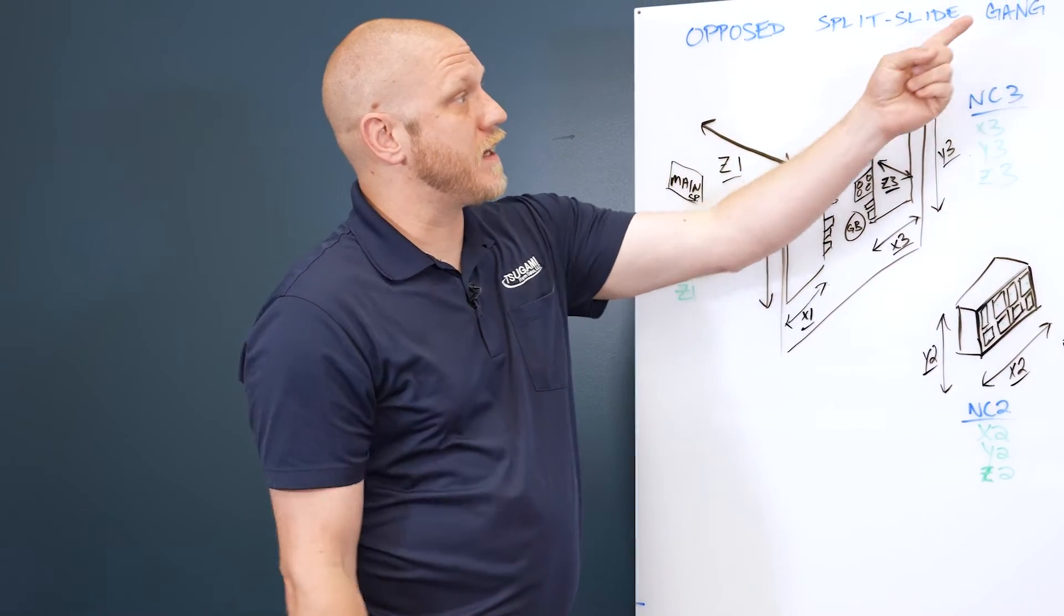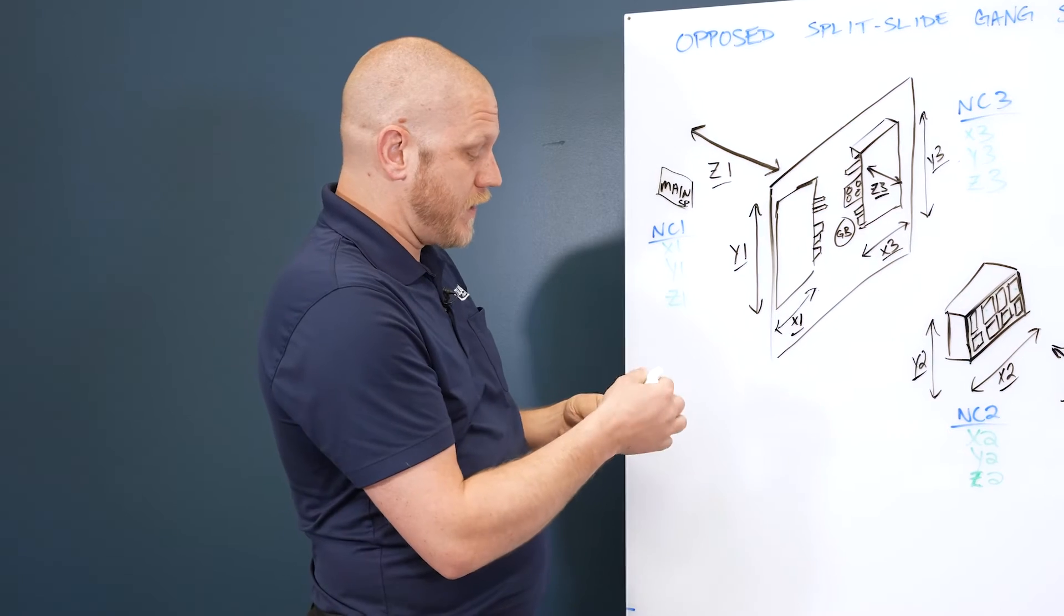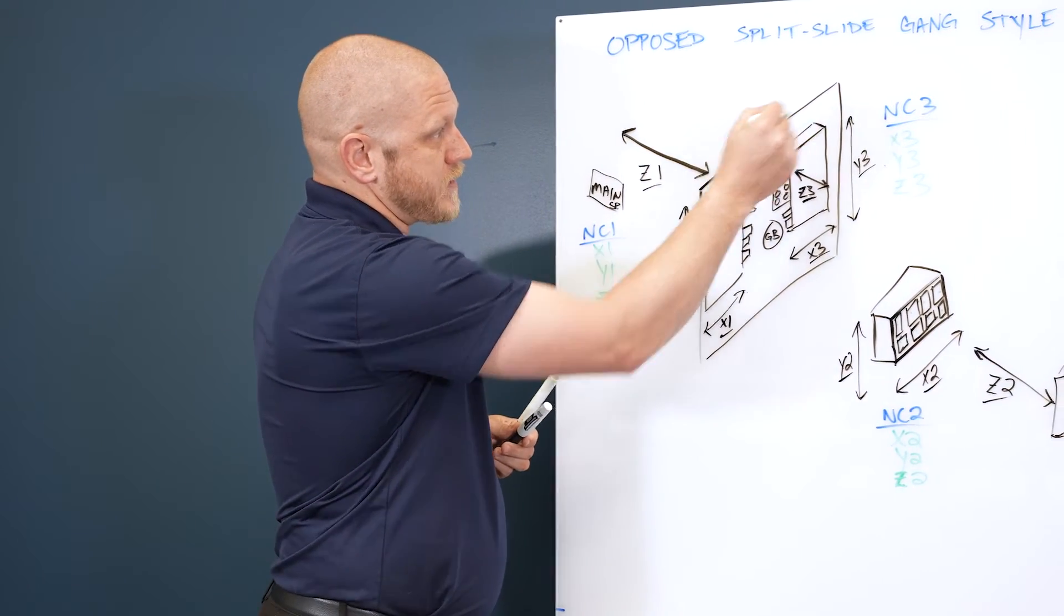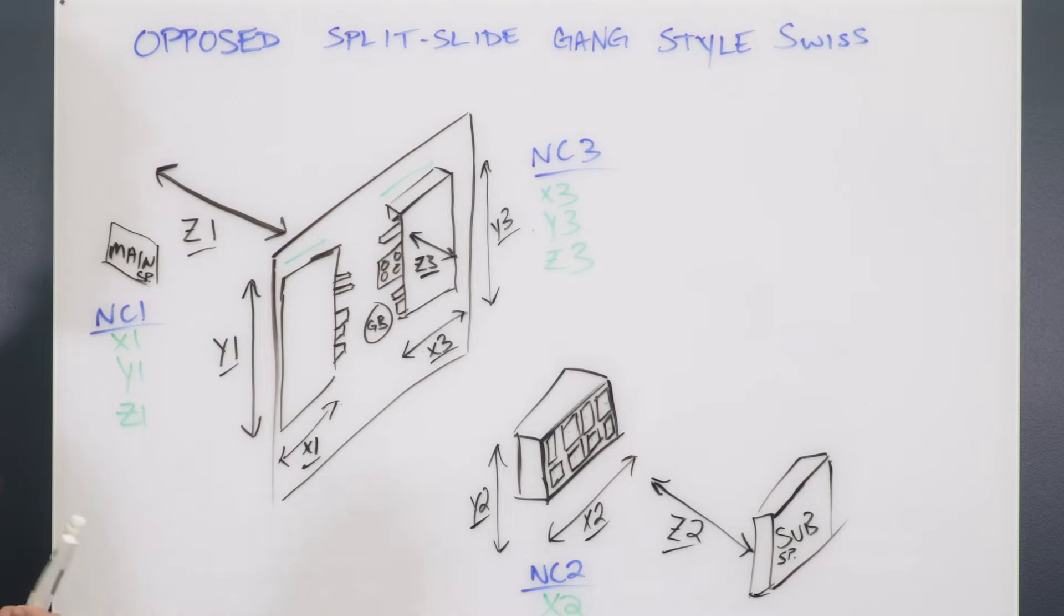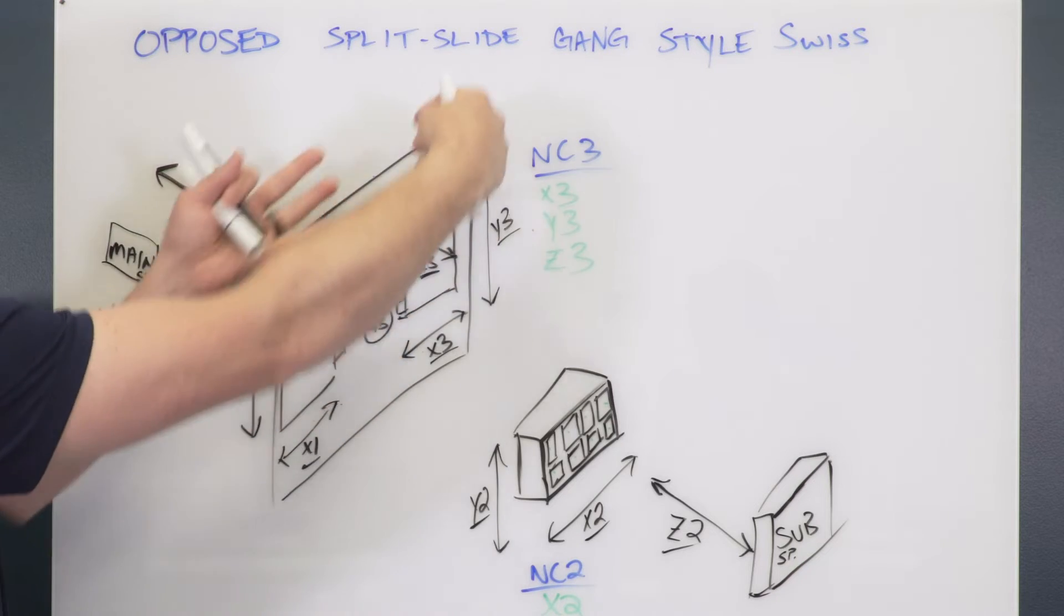This is an opposed split slide gang style Swiss. Split slide basically separates this slide from this slide. With an opposed gang slide machine, just standard opposed two-path, these two slides are always connected so they have to move together wherever they go.